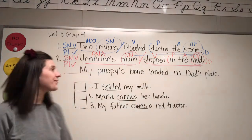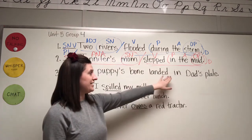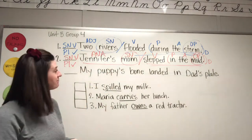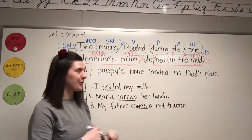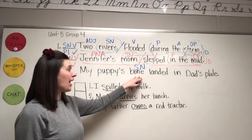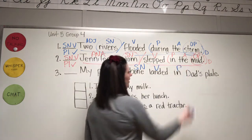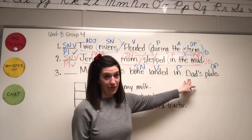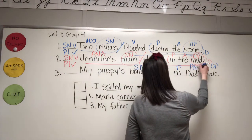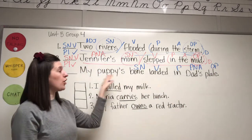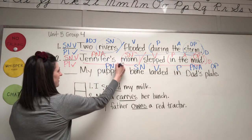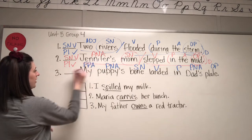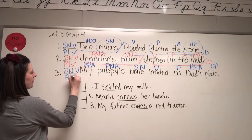Sentence number three: My puppy's bone landed in dad's plate. It's a fun story! What landed in dad's plate? Bone — subject noun. What is being said about bone? Bone landed — verb. In — preposition. In what? Plate — object of the preposition. Whose plate? Dad's — possessive noun, adjective. Whose bone? Puppy's — possessive noun, adjective. Whose puppy? My — possessive pronoun, adjective. Subject, noun, verb — Pattern One. Check! Woohoo!